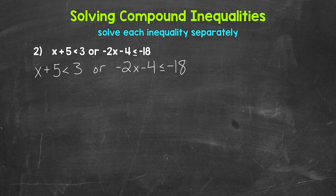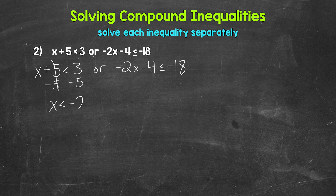Let's start with x plus 5 is less than 3. We need to isolate x and undo that addition. The inverse operation of addition is subtraction, so we subtract 5 from both sides. The 5s on the left cancel each other out, and x is now isolated. So we have x is less than 3 minus 5, which gives us negative 2. So we have x is less than negative 2.